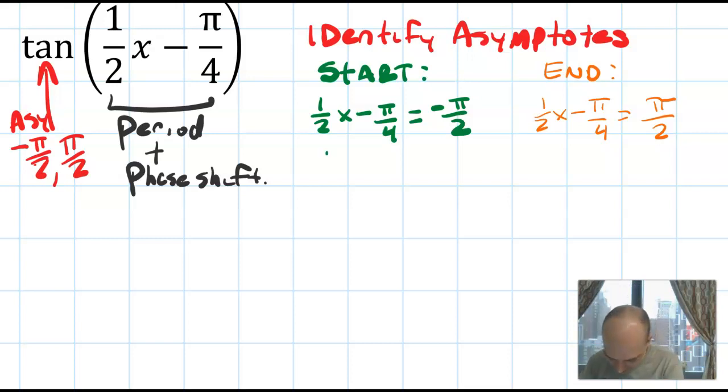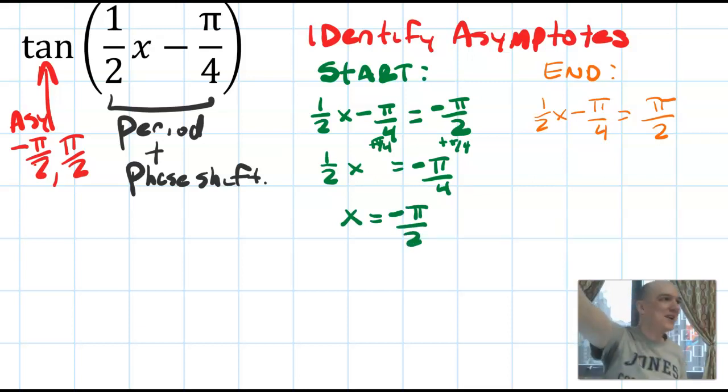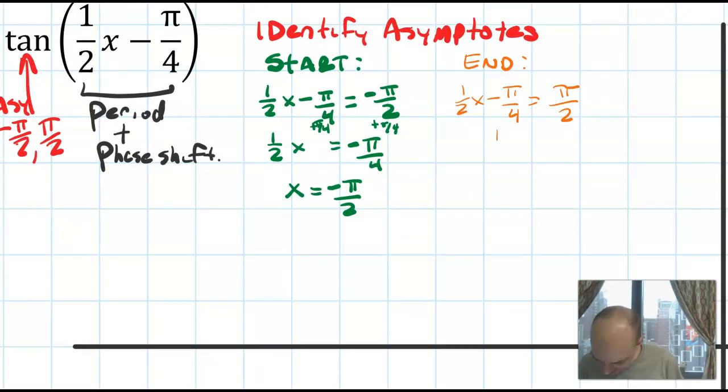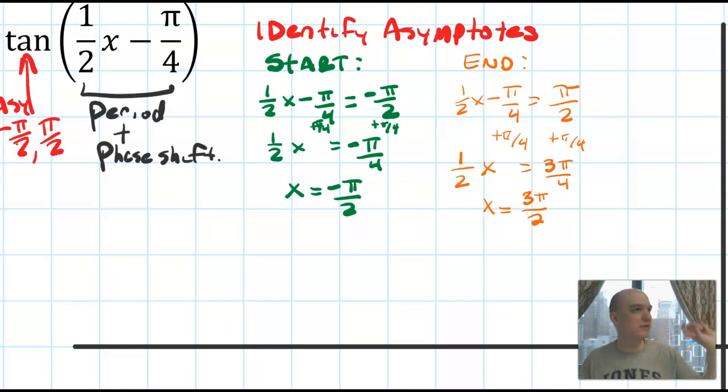So we do some algebra and solve this out. I get 1/2 x equals, if I add π/4, I actually get 1/2 x equals negative π/4. Multiply by 2, I get x equals negative π/2. That's a little weird because it actually means the asymptote didn't move at all. I did some algebra and got exactly the answer I started with, but it is going to work. It is actually the right answer. Now the second asymptote will have moved, so I'm going to add π/4 to both sides. And I'll end up with 1/2 x equals 3π/4, times that by 2 and I get x equals 3π/2. So those are going to be the two asymptotes.